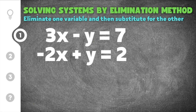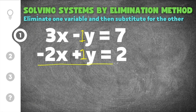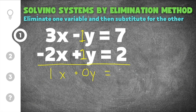The first equation gives us a negative 1y — there's a 1 there even though it's not written — and the second equation gives us a positive 1y. This means that if we add those together, negative 1 plus positive 1 gives us 0y, and the y's cancel. So I'm going to draw a line and add these two equations straight down. 3x plus negative 2x is positive 1x, negative 1y plus positive 1y is 0y, and 7 plus 2 is 9. Since it's 0y, those cancel, and we simply have x equals 9.